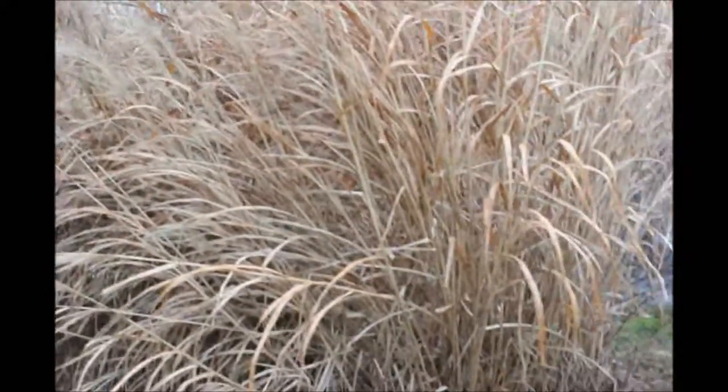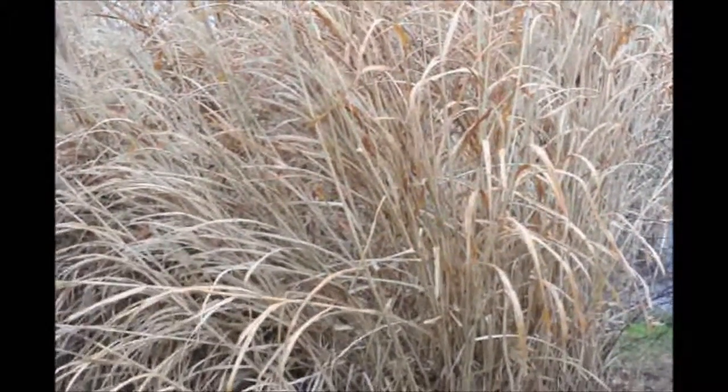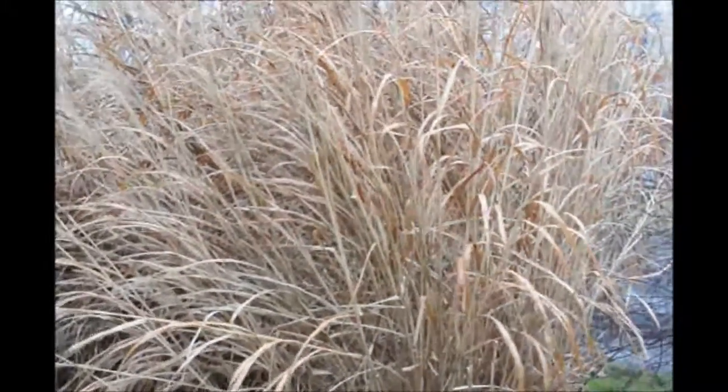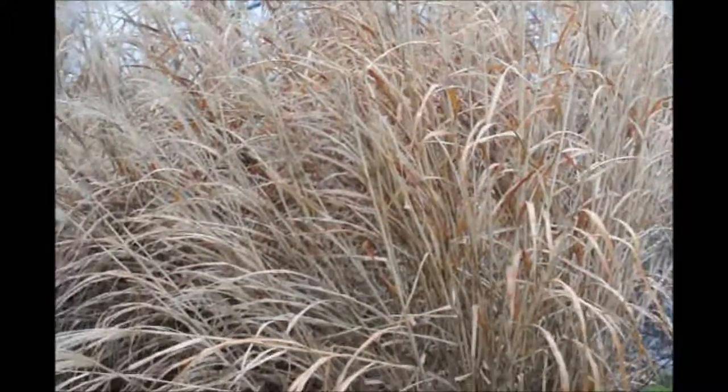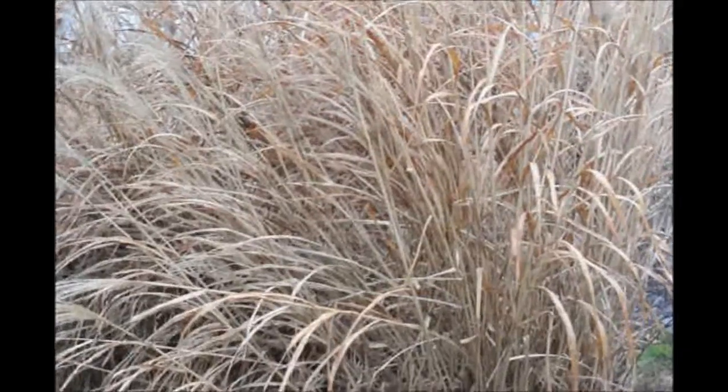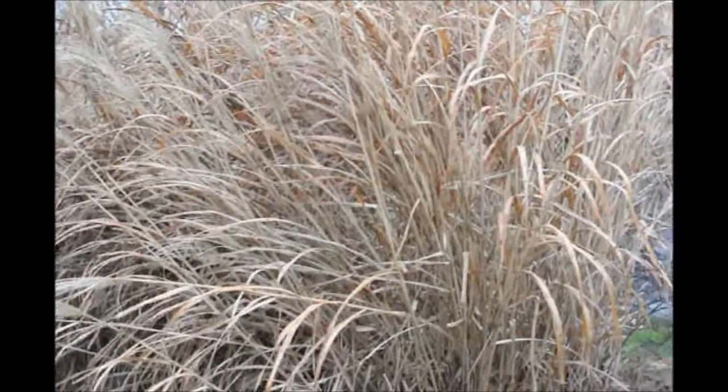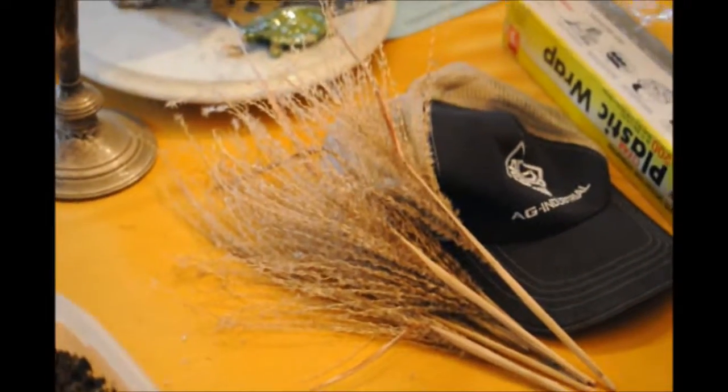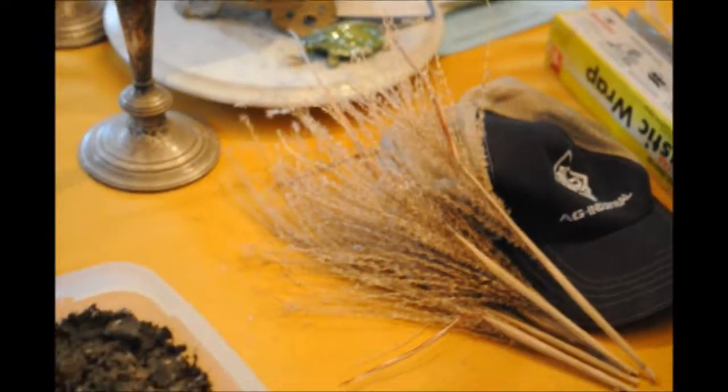This is an ornamental zebra grass and today we're going to propagate this not by division because the plants are very tough to dig out, but by seed. It'll take a little longer to do the seeds, but it's the middle of January and it's the time when we can do seeds of these plants. We propagate them in the house and I'll show you how we do it. These are ornamental grass seeds on a stem.